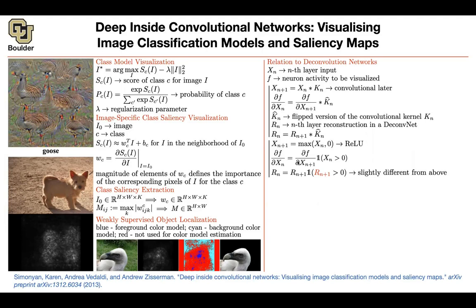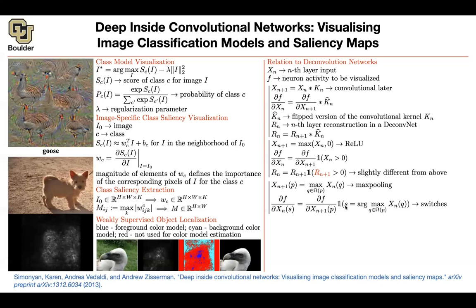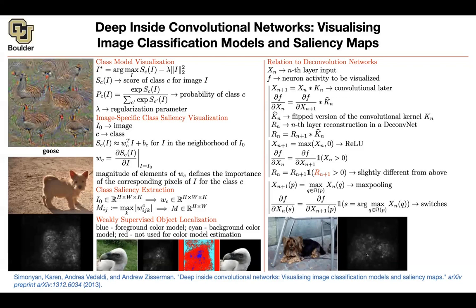For max pooling, you look at a region around a pixel and compute the maximum. Doing the chain rule requires storing switches during the forward pass. When going backward you use those stored switches to know where to place the values — otherwise it's zero. The only approximation is at the non-linearity. The other change from before: this paper uses an indicator function, while the previous deconvnet paper used a ReLU when going the reverse route to visualize feature maps.